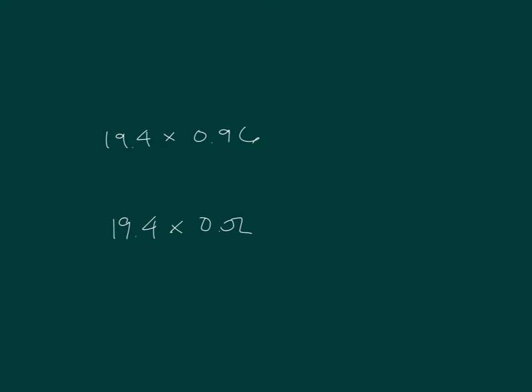Which product will be less than? They're both going to be less than. This one will be a lot more less than 19.4 than the first one. The scaling factor, what we're multiplying, is less than 1 for both of those. That's why our answer will be less than 1 for both of those.